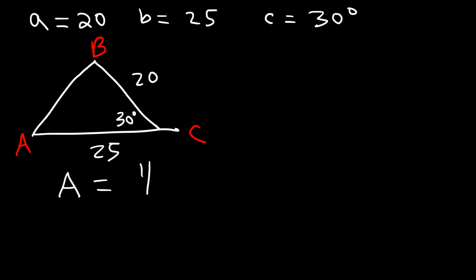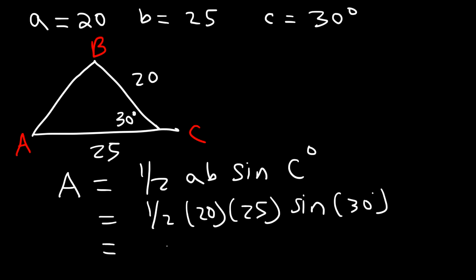So let's use the formula, the area is 1 half AB times sine of angle C. So A is 20, B is 25, and angle C is 30 degrees. 1 half of 20 is 10. And sine of 30 is 1 half. Now if we take half of 10, that's going to give us 5. So we're left with 5 times 25, which is 125. So the area is 125 square units.